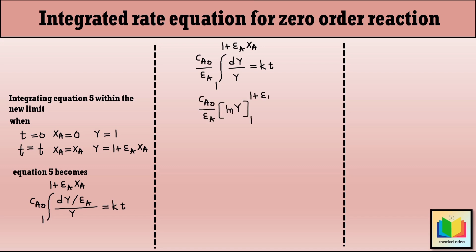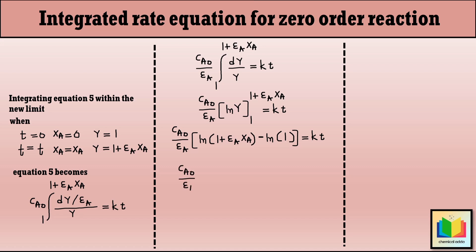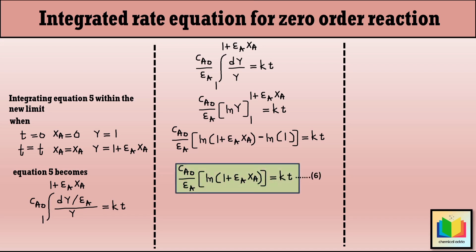After applying the integration formula and the limits, we get the equation: C_A0 divided by epsilon_A, into ln(1 plus epsilon_A X_A), equals K into T. This equation is the integrated rate equation for zero order reaction for variable volume batch reactor.